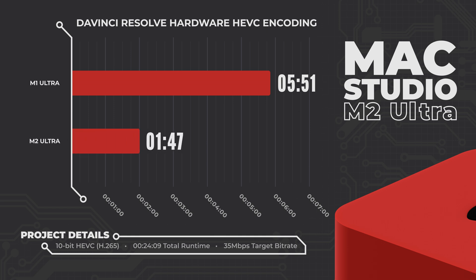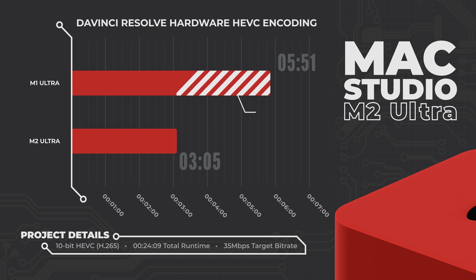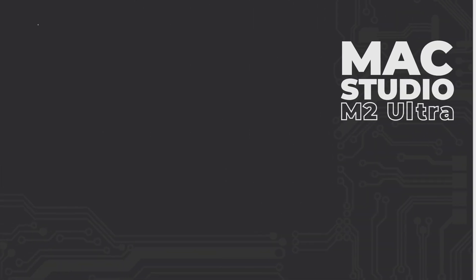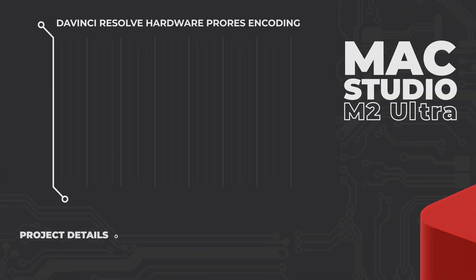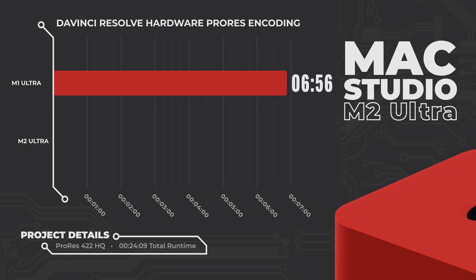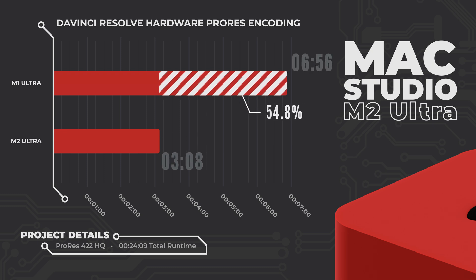But it gets even better with the M2 Ultra. The new chip finished the same project in an even faster 3 minutes 5 seconds, which is literally only 12.7% of the project's runtime. Running the ProRes test with the same 422 HQ spec, the M1 Ultra came in at 6 minutes 56 seconds. The M2 Ultra finished the ProRes export in just 3 minutes 8 seconds — not only dramatically faster than the runtime, but also much faster than the M1 Ultra.